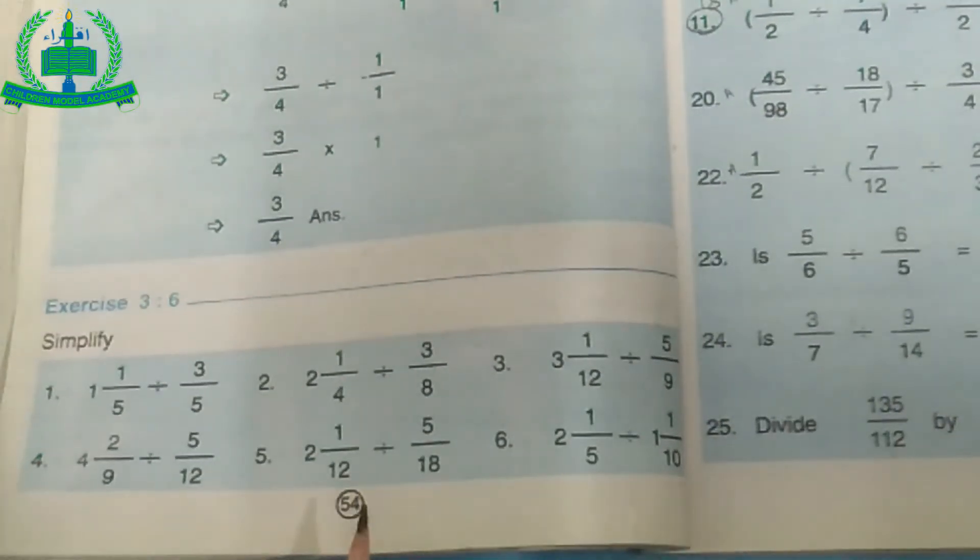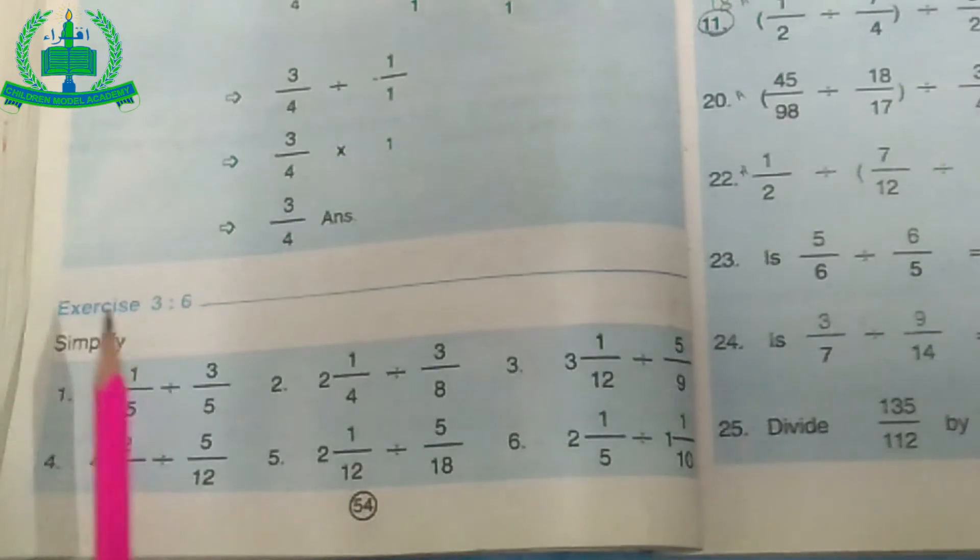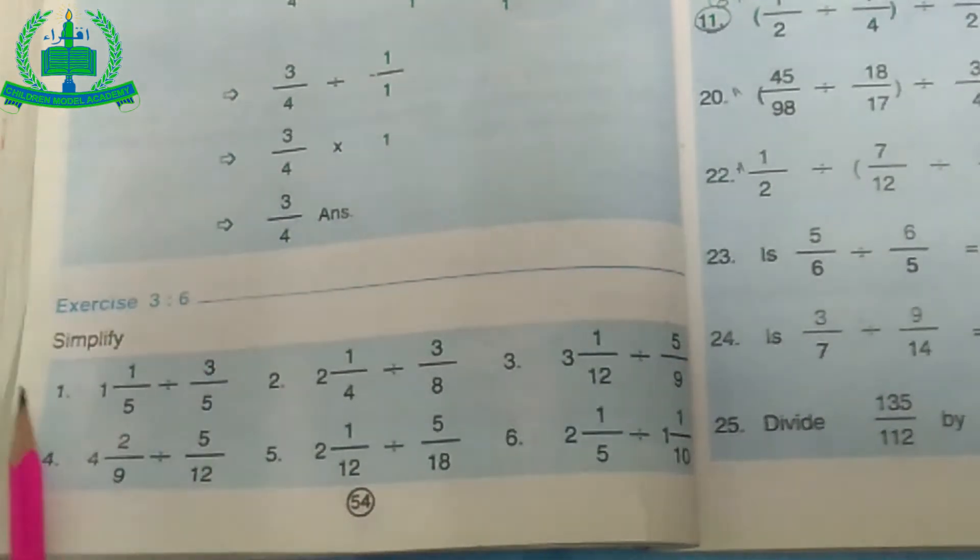Now open your math book, page number 54, exercise number 3.6, simplify question number 1.